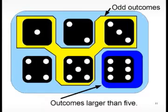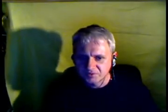If the implication also runs the other way, we have logical or set theoretical equivalence. The intersection of die outcomes that are odd and larger than five is the so-called empty set, which contains no elements. If two sets are like that, they're called disjoint. The logical concept is called mutually exclusive, and can be written as A implies not B, or alternately B implies not A.